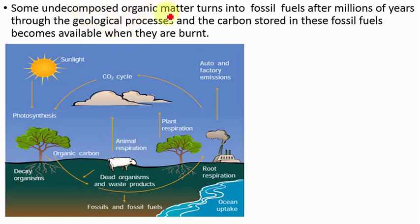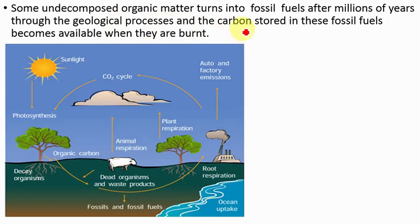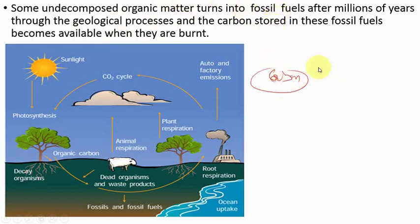Another example of the long-term carbon cycle is fossil fuels. When living organisms die and certain organic matter does not decompose but is deposited deep in the earth, after millions of years through geological processes it turns into fossil fuels like petroleum and natural gas. These organisms had carbon in them, so all this undecomposed organic matter that turned into fossil fuels retains carbon. When we burn fossil fuels, the carbon stored in them is released. This is also an example of the long-term carbon cycle.